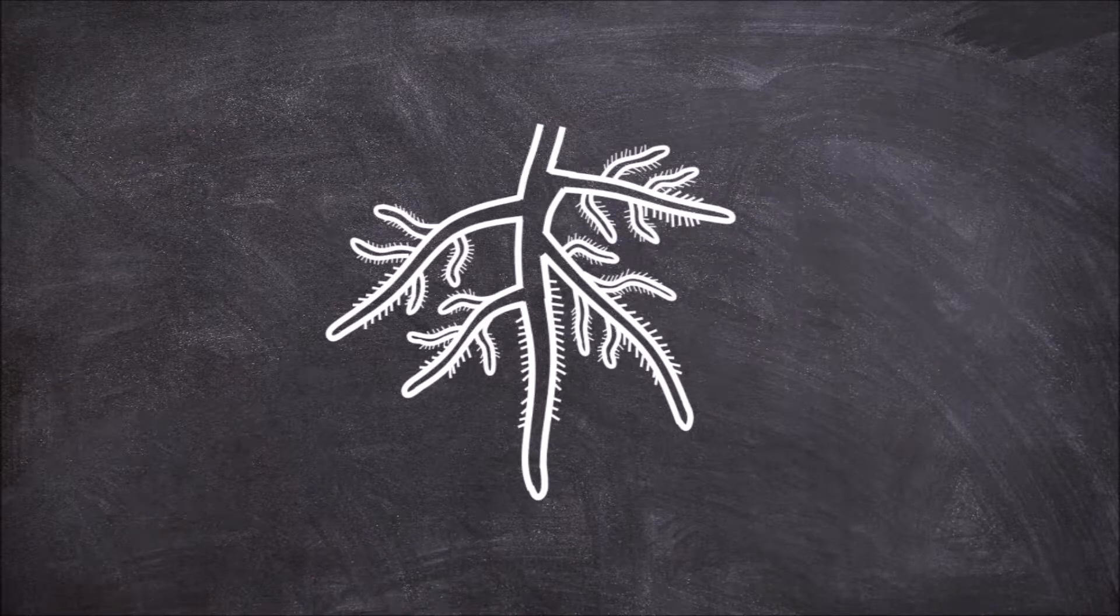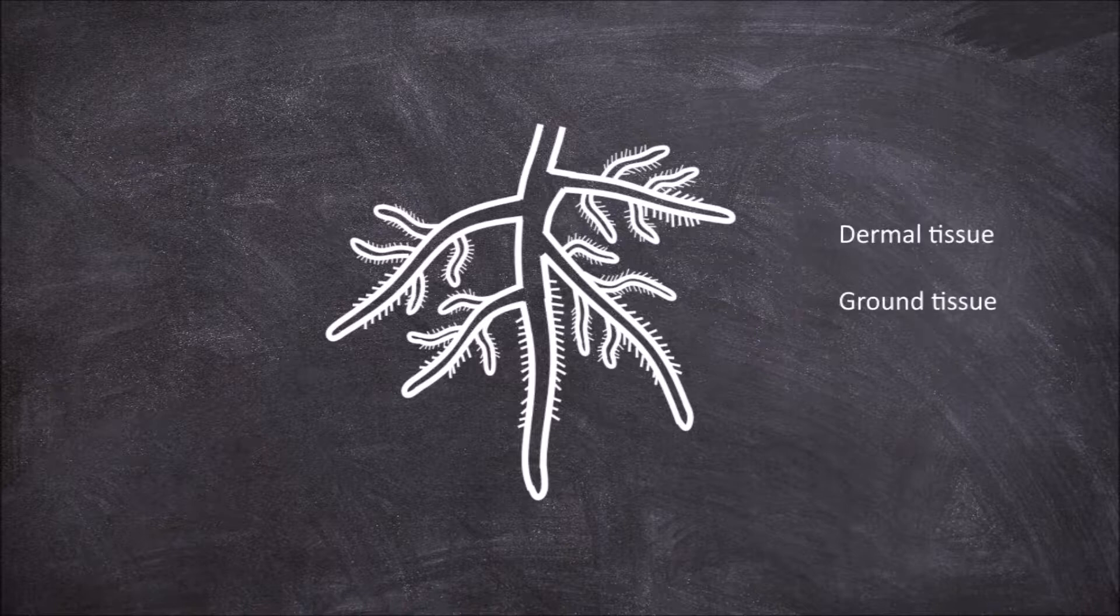Within the root, like in all other plant organs, there are three types of tissue: dermal, ground, and vascular tissue.